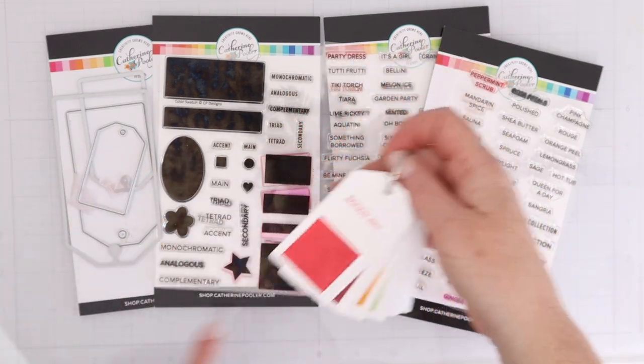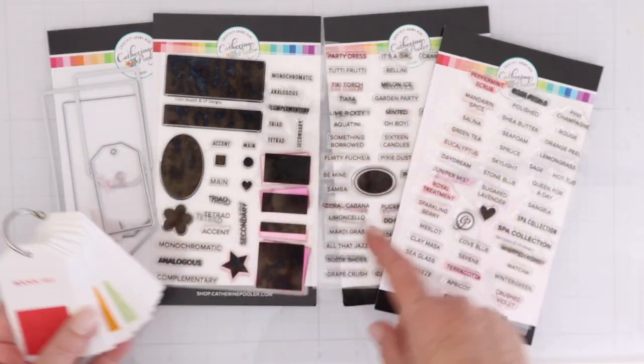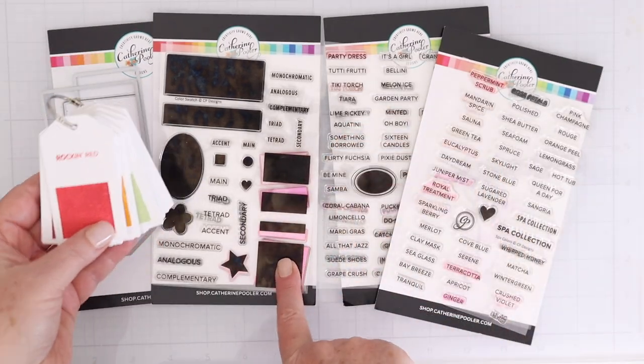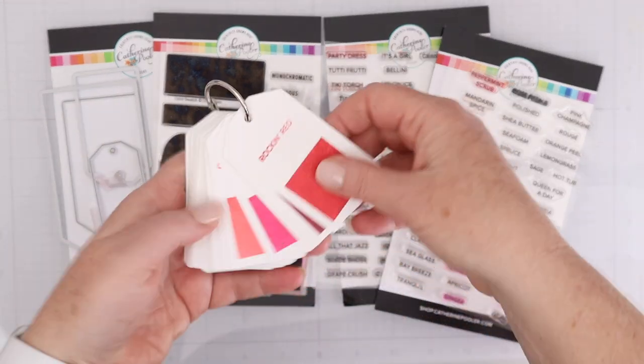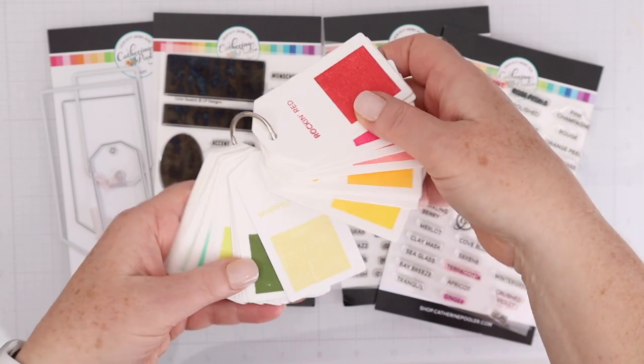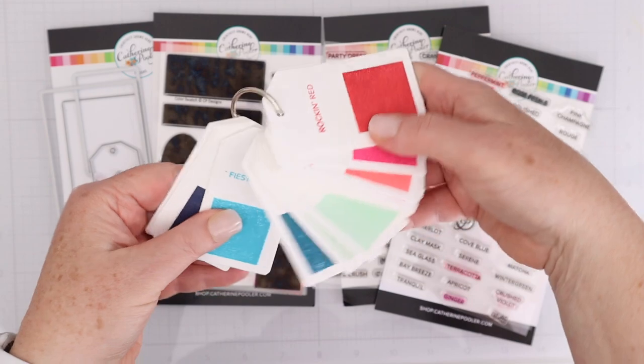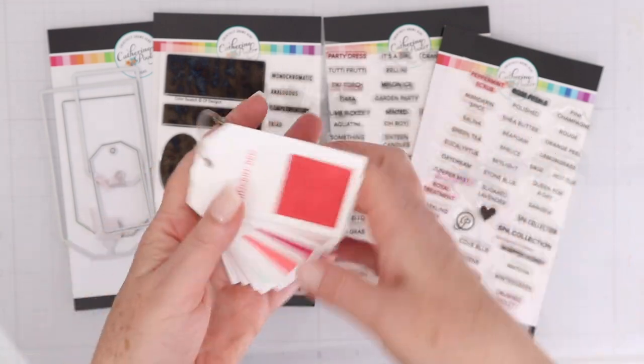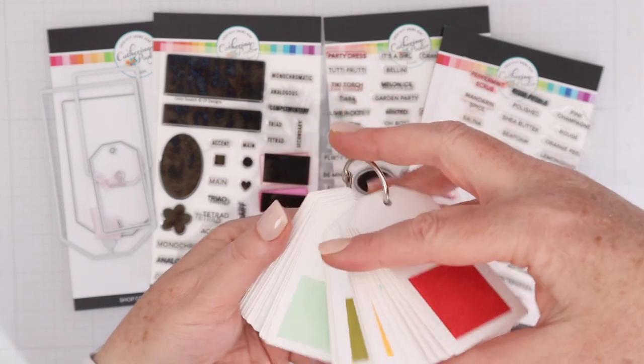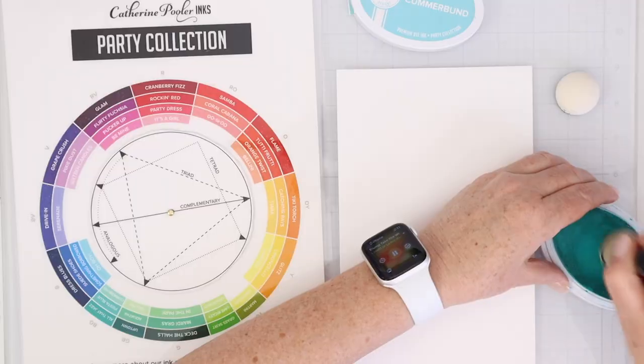And I used this square - the small square at the bottom - to stamp out all of my Catherine Pooler inks, and I'll do this as I get new ones as well. I'll just add them to this swatch ring and that gives me an idea of what these inks look like when they're stamped out. Because every type of ink dries back a little bit, right? Catherine Pooler inks really stand up nicely and are bright and crisp and true, but everything dries back a little bit.